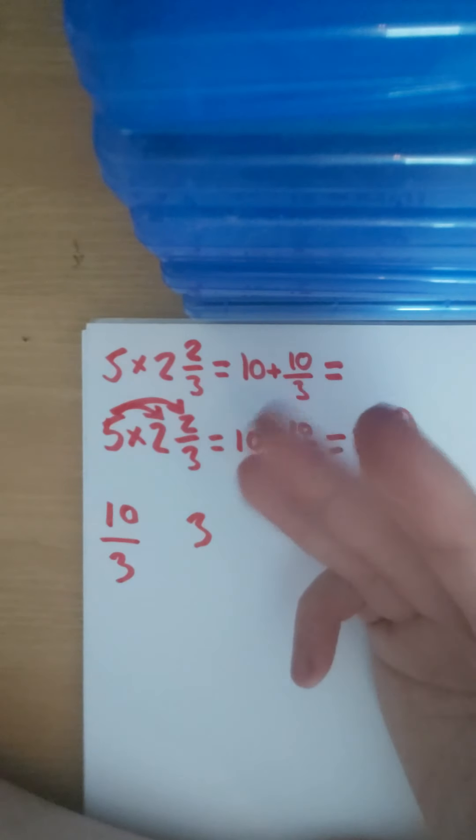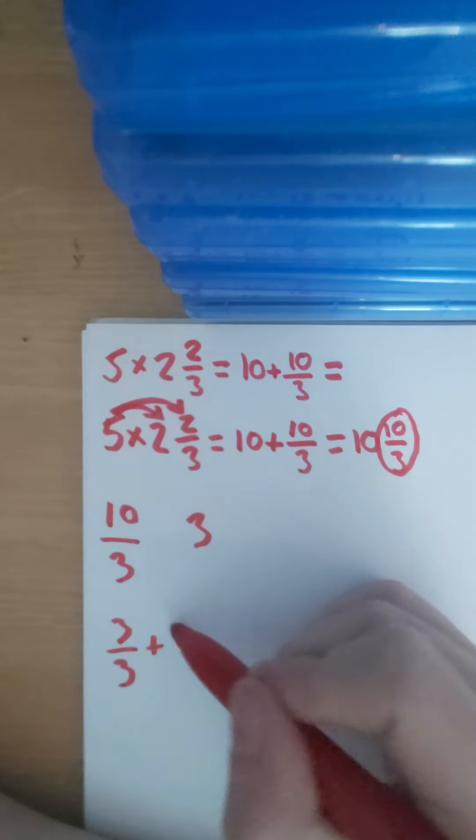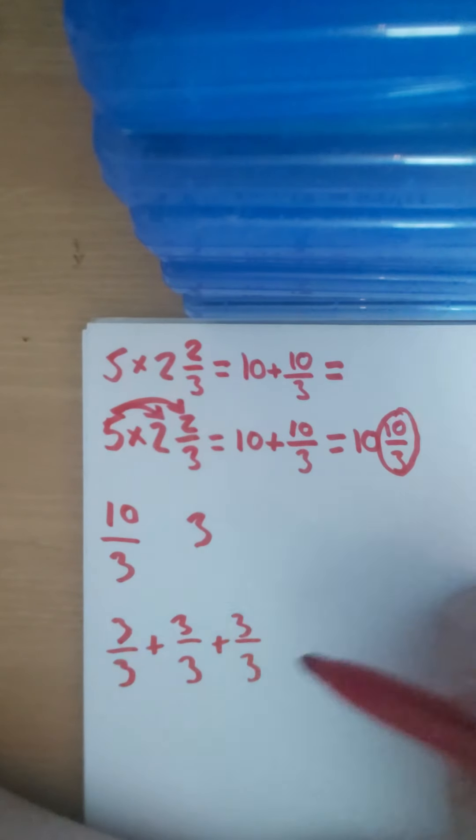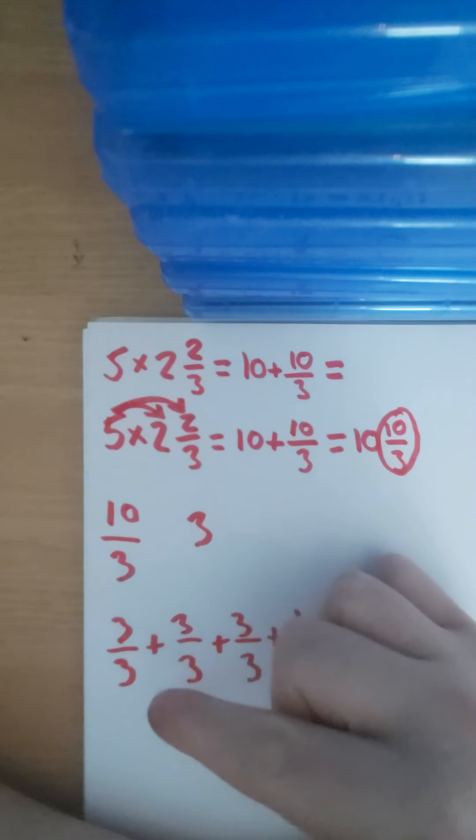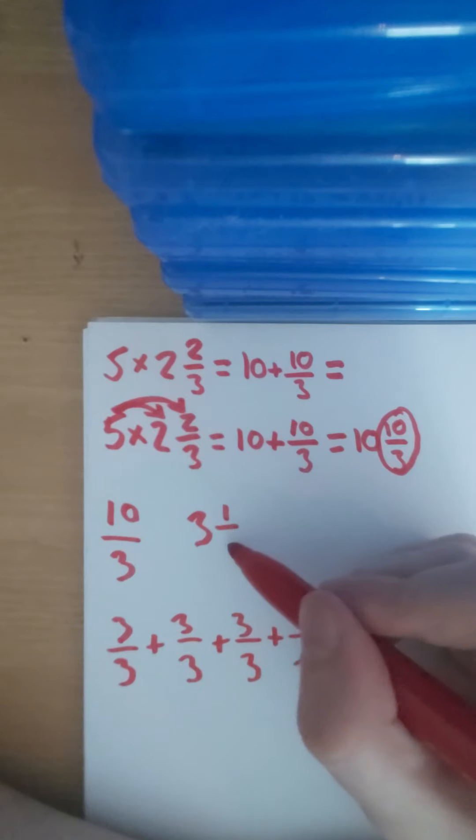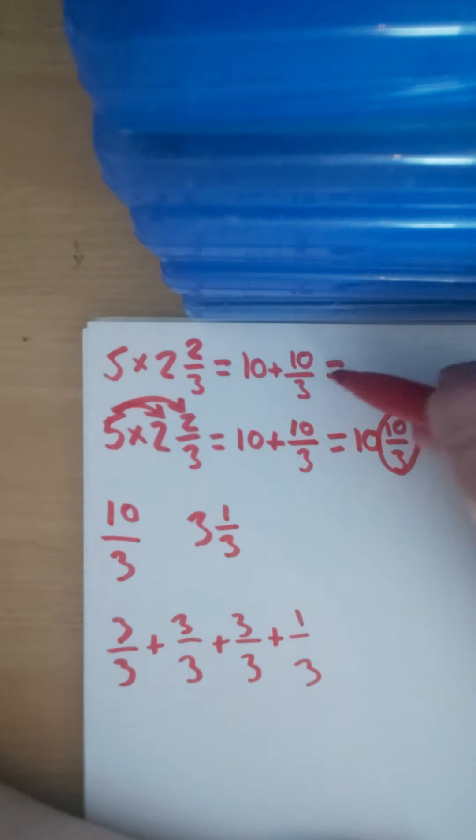So we know that there are three wholes. Do you see that? Because we've got 3, 6, and 9. We've essentially got 3/3, 3/3, and 3/3, and then we've got 1/3 left over. So we've got three wholes and then 1/3 left over. So it's 3 and 1/3.